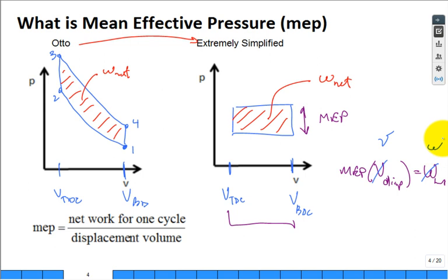But your equation for the mean effective pressure is the work net for this cycle divided by the displacement volume.